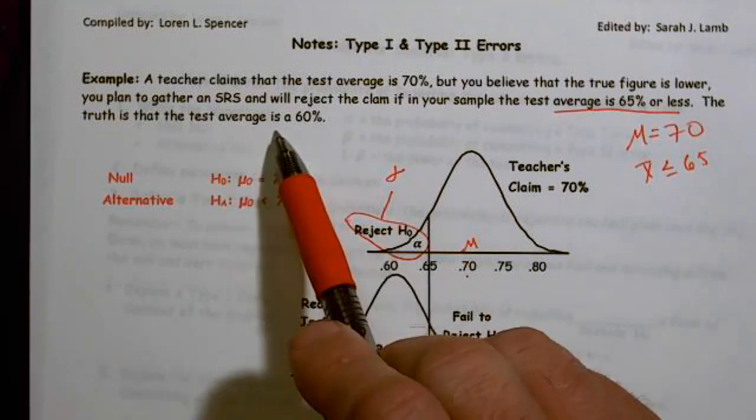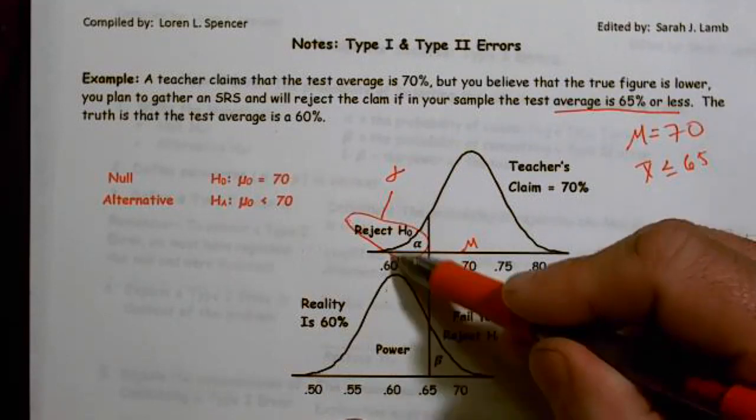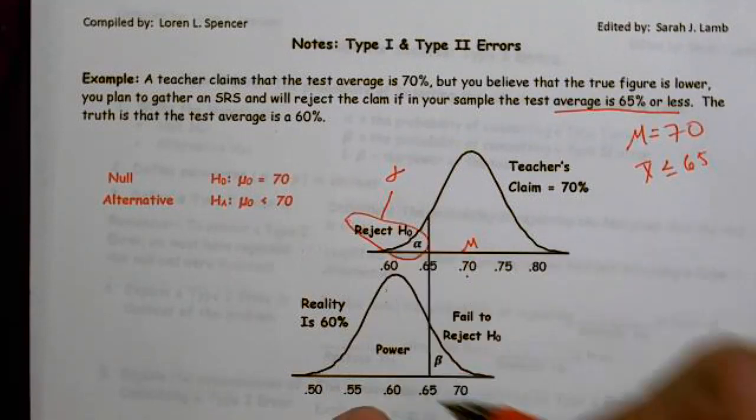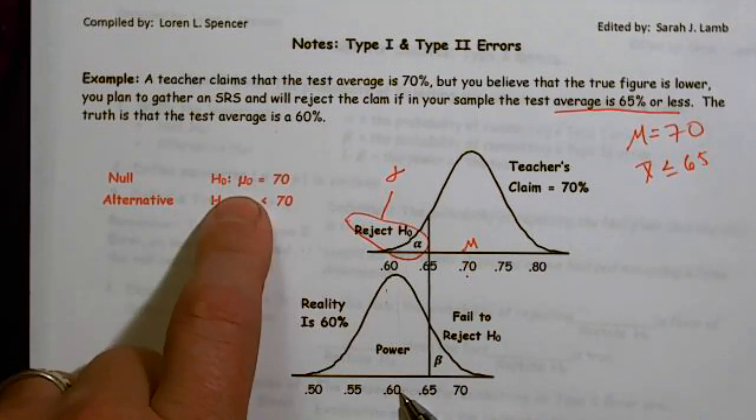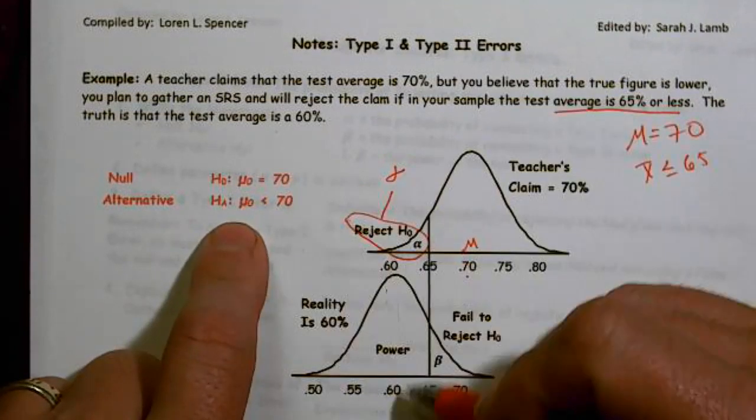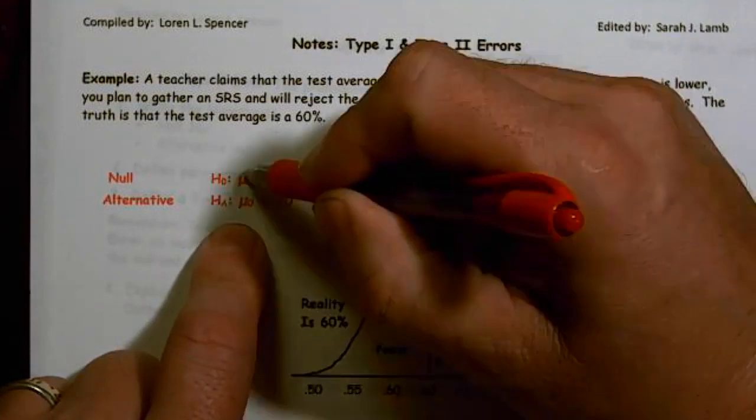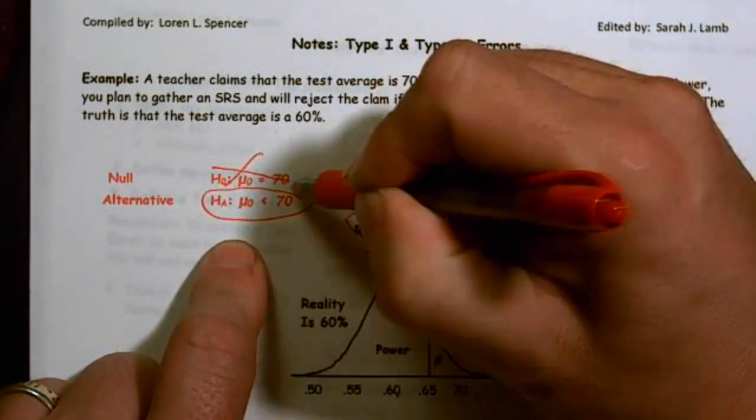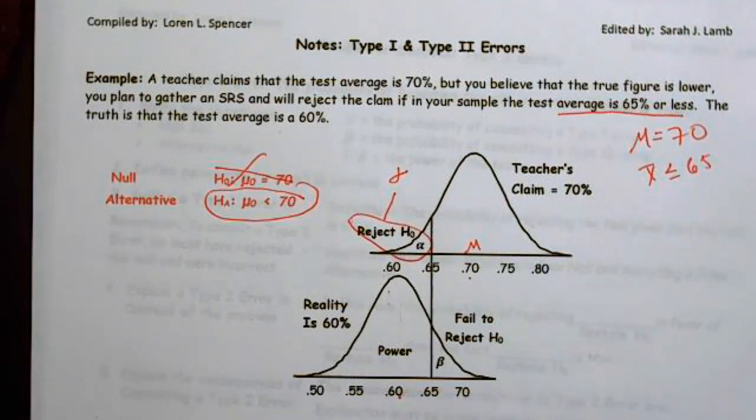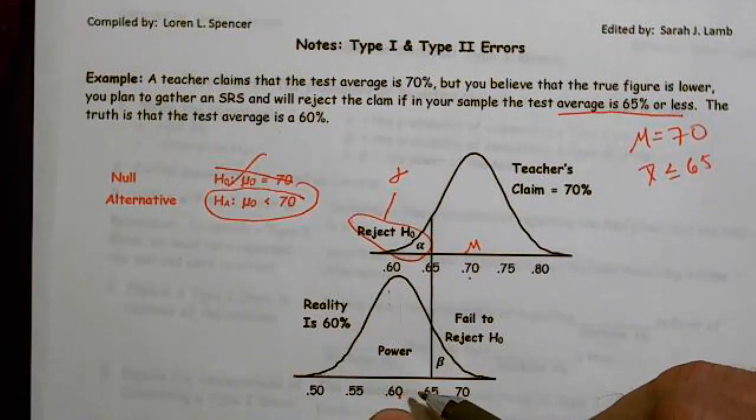Well, it turns out the test average was actually 60. And notice the 60s line up. So this is the actual truth. So really, you should be rejecting this. Because 60 is the truth, that means this is false. And we should be believing that 70 is false. That's what should happen.